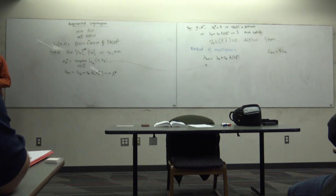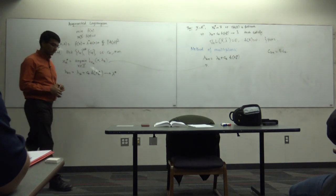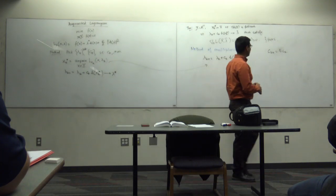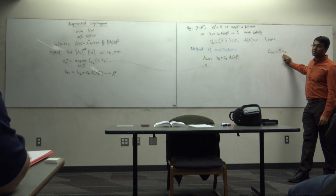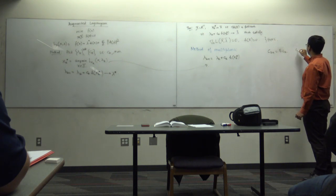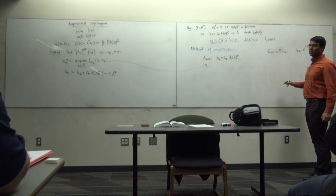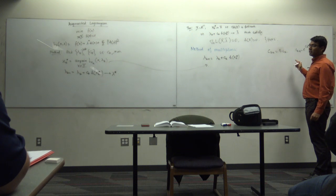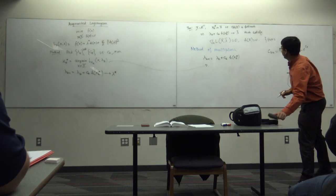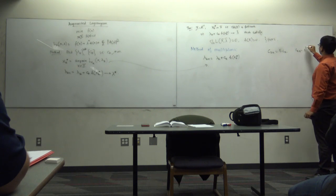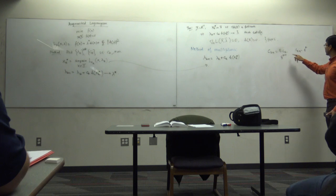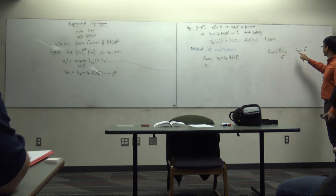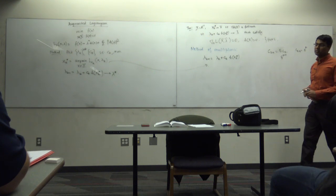A student asks why c_{k+1} = 5*c_k and not c_k = e^k. The instructor clarifies that with c_0 = 1, the recurrence c_{k+1} = 5*c_k gives c_k = 5^k, while c_k = e^k is just multiplying by e instead of 5 each time. Both are geometric sequences; the base just changes. Either approach is fine.